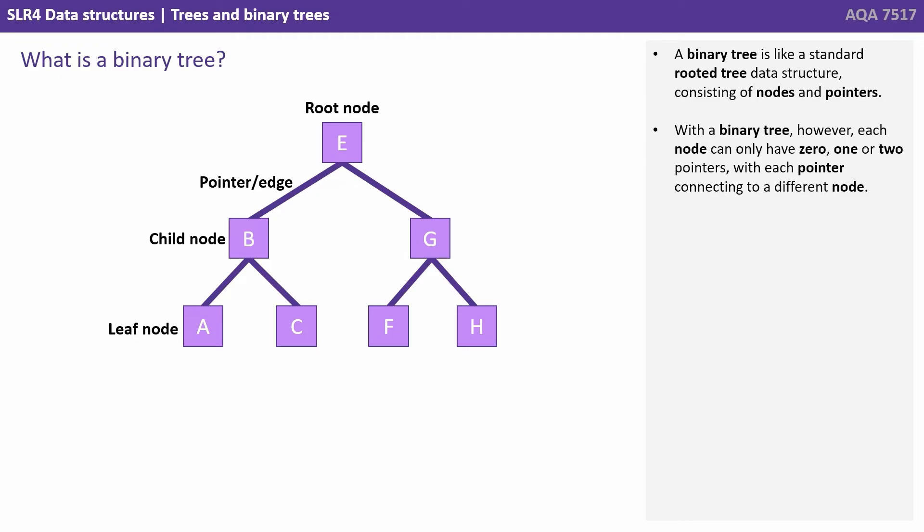But with a binary tree each node can only have zero, one or two pointers, with each pointer connecting to a different node.